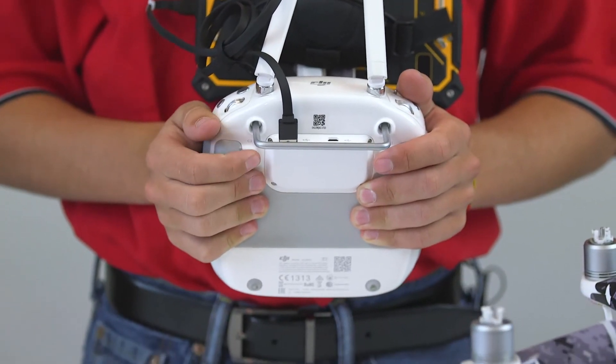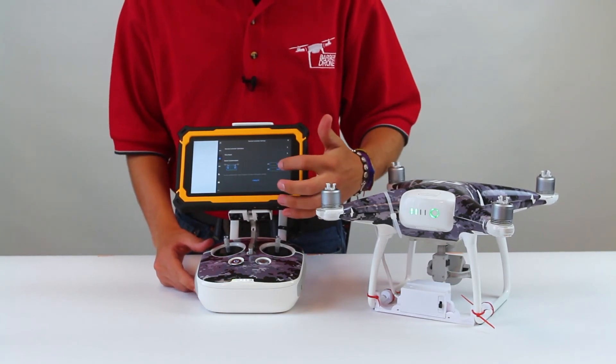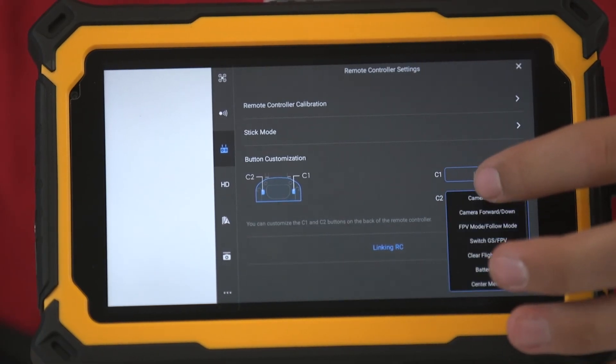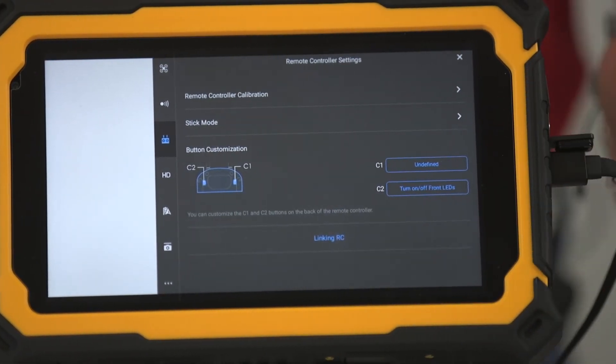If you are right-handed, you should reprogram button C2. You will need to scroll through the choices on C2 by pressing it and scrolling down to the turn on and off front LED choice.